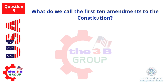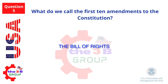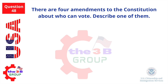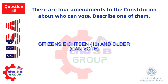What do we call the first ten amendments to the Constitution? The Bill of Rights. There are four amendments to the Constitution about who can vote. Describe one of them. Citizens 18 and older can vote.